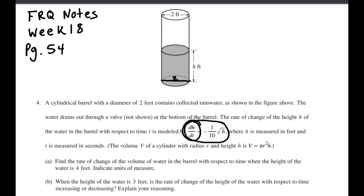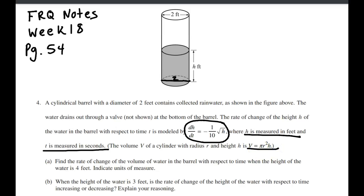So this is the rate of change of the height with respect to time, and this is what it equals. As you can see, H is part of that equation. A lot of times the ones I've given you always have a T in there, but this one has an H, which is a little different. They tell us that H is measured in feet and T is measured in seconds. They also tell us that the volume of the cylinder is that formula there, where R represents the radius.